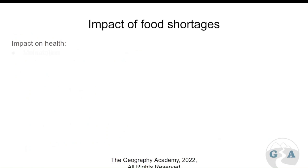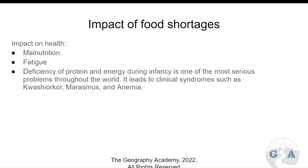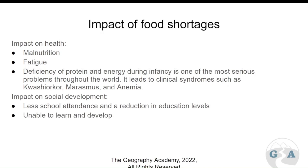The impacts that food shortages can have on an area: we see malnutrition and fatigue as personal impacts. There's more deficiency in proteins, which means more serious medical conditions, potential for infections, and it's difficult to fight viruses. You've got syndromes such as kwashiorkor — where we see the swollen stomach. Social development means less people attending school, less social development, lower life expectancy, changing fertility rates, and an inability to learn and develop without a healthy diet.